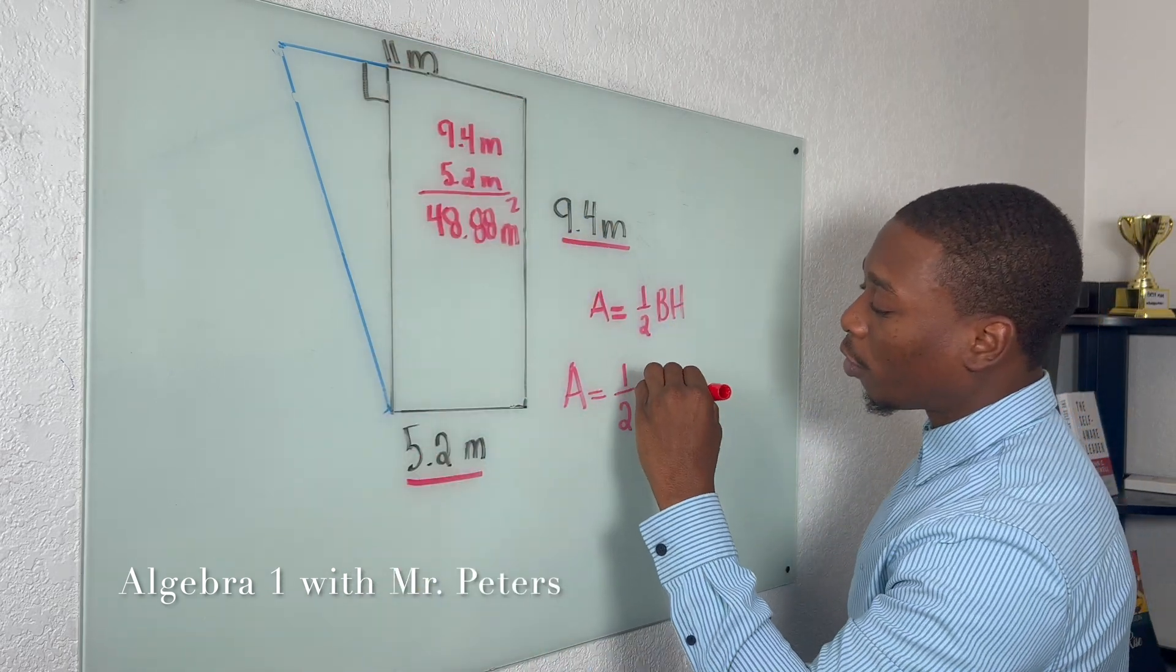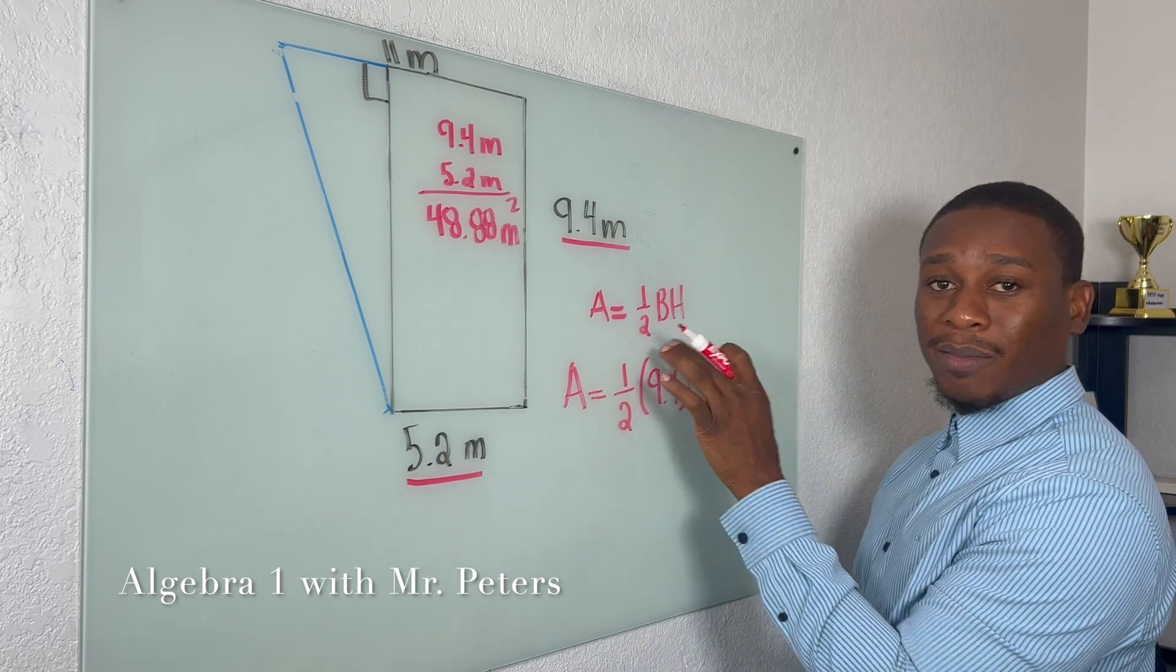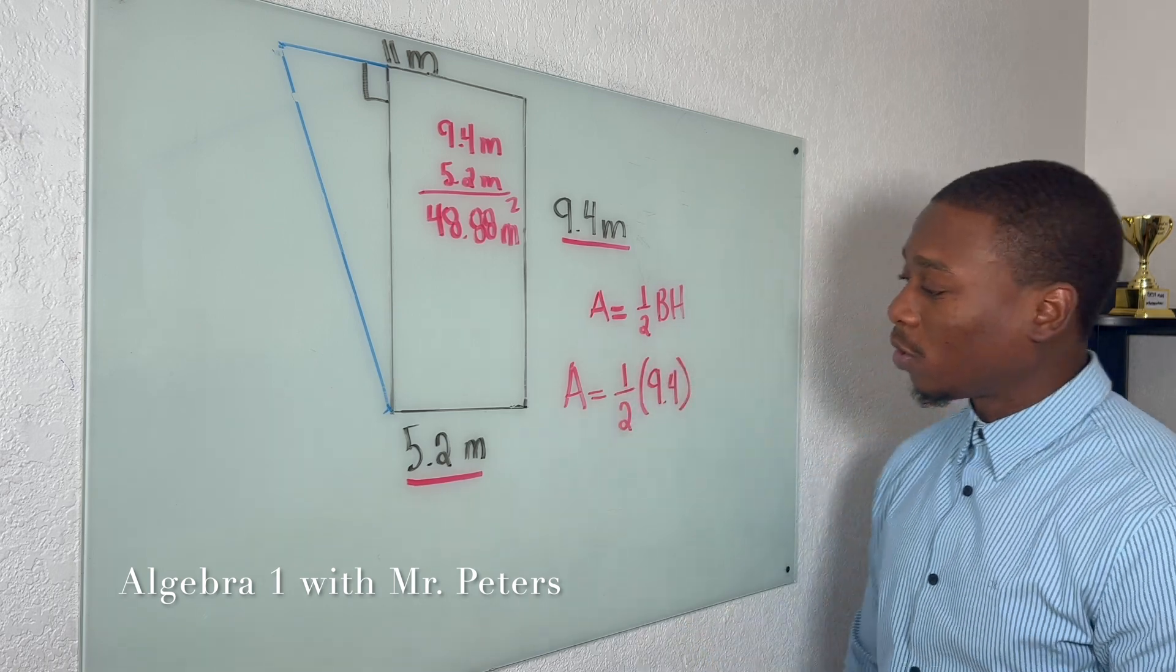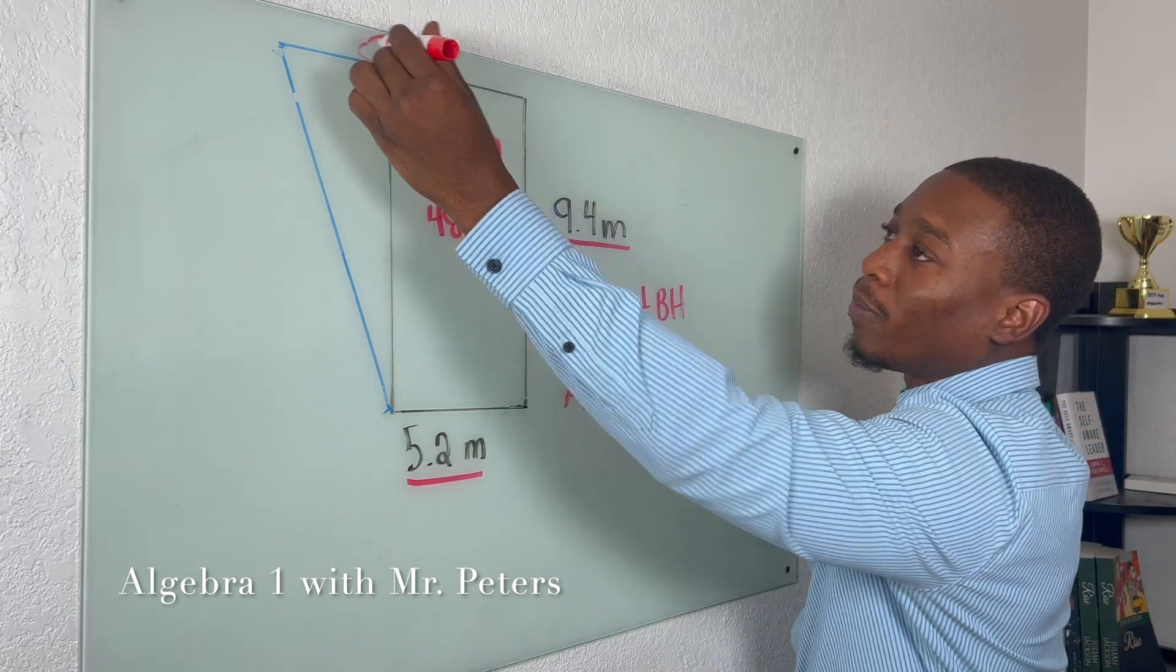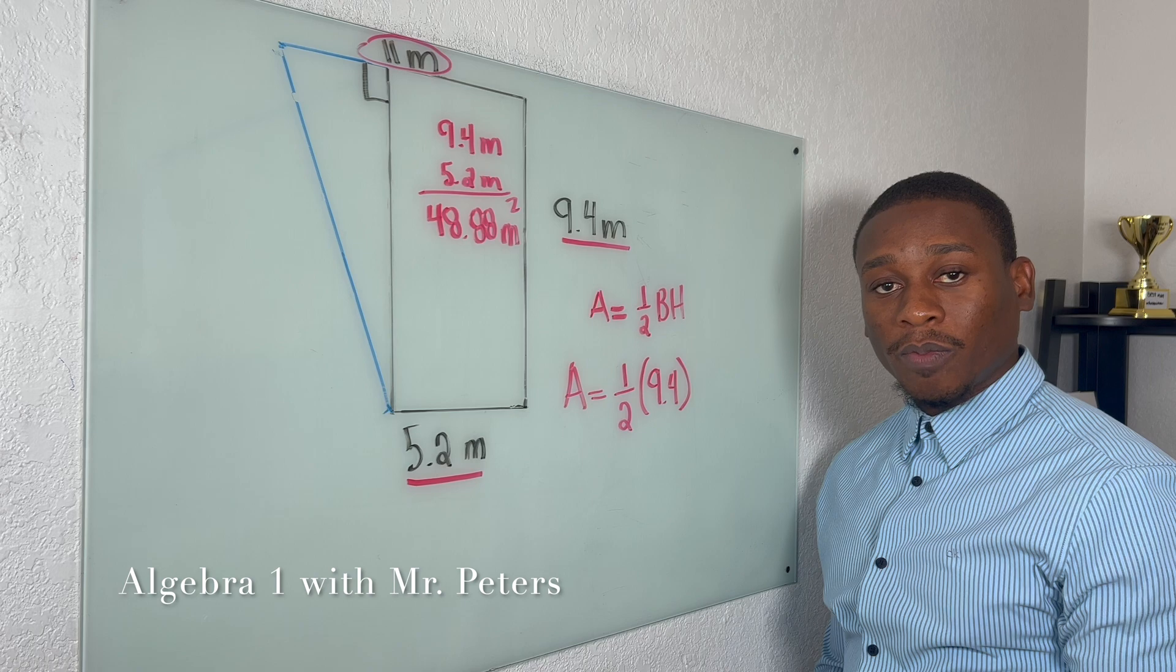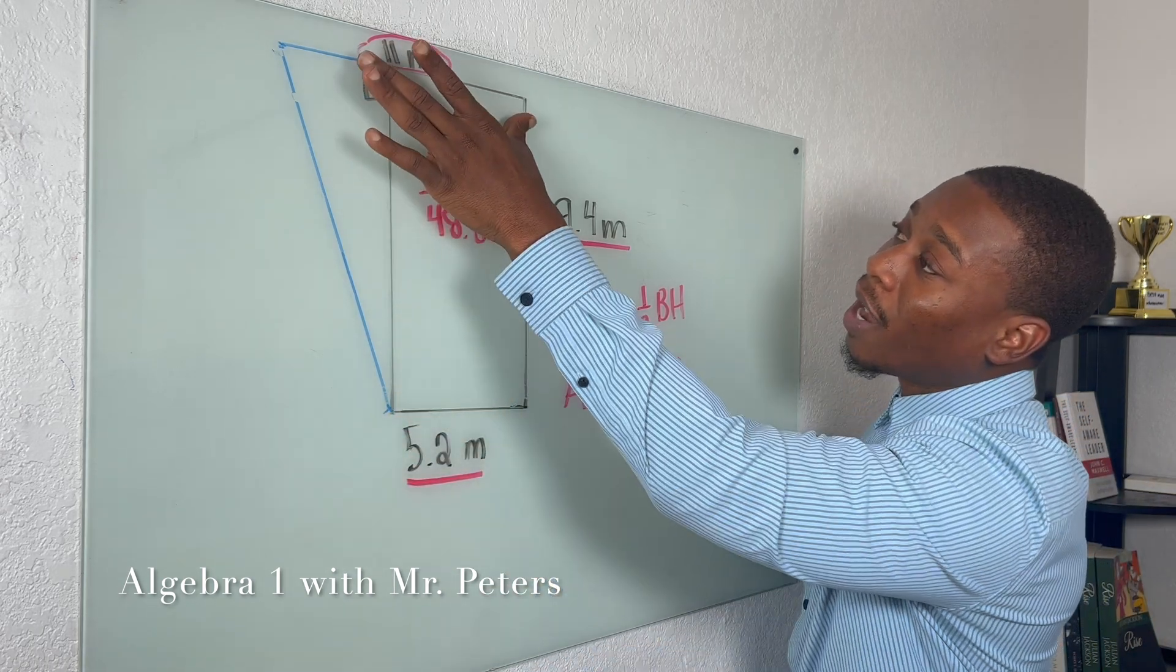And just understand if you multiply and it's not the same exact order, we'll still get the same answer. But then the most important thing is for us to understand what is our base. So in this problem, to figure out our base, it's not 5.2 and it's not 11.